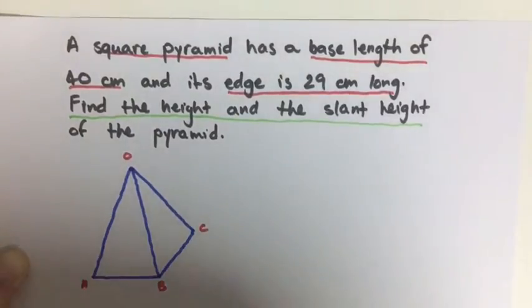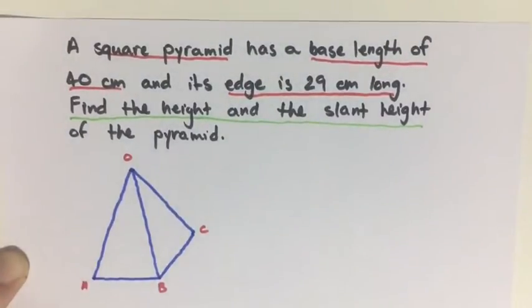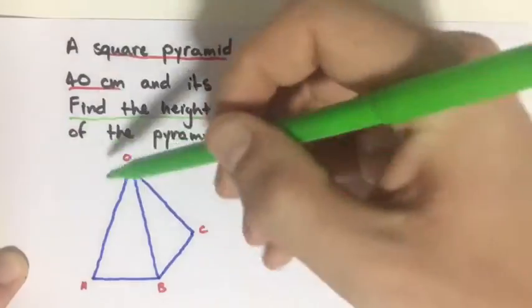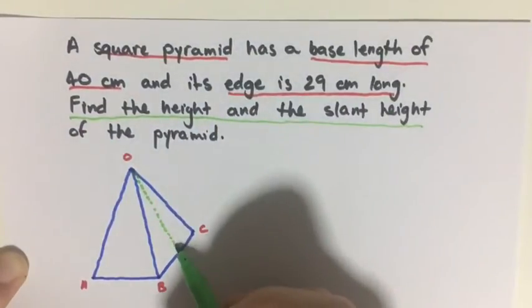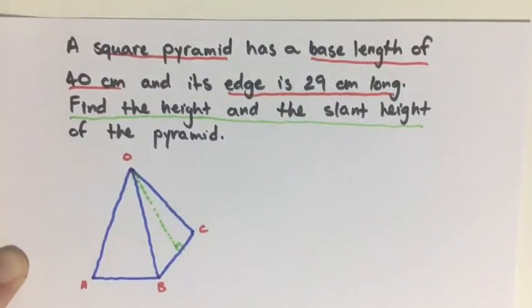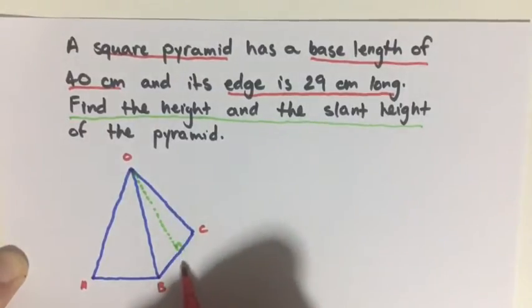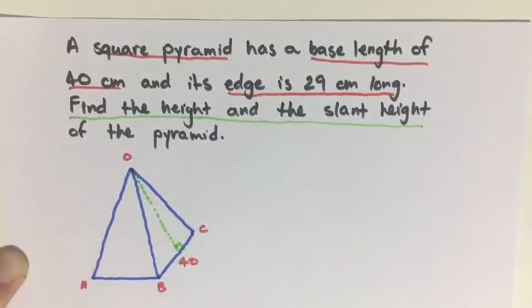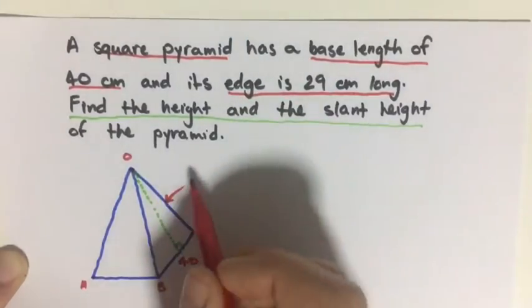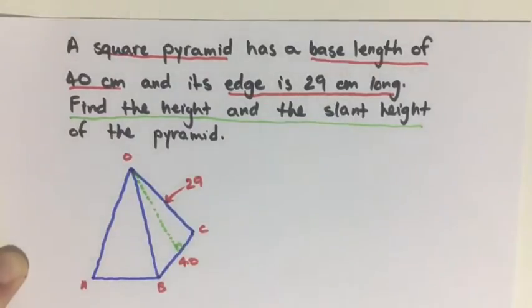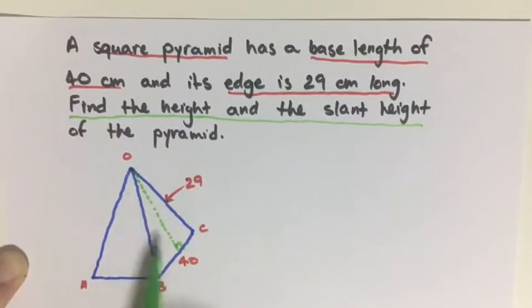Alright, so what we need to do first is actually find the slant height first. The slant height, if you remember, is this line here and we know it's at a 90 degree. So let's label this. We have a base length of 40 and the edge is 29. So this line right here is 29 centimeters. And we want to find the slant height.